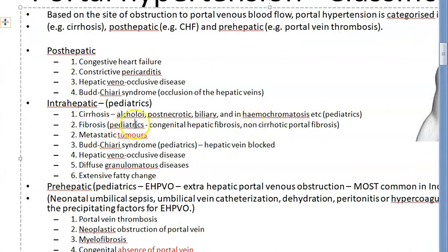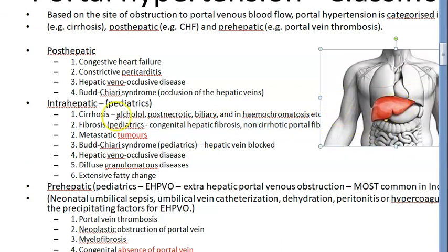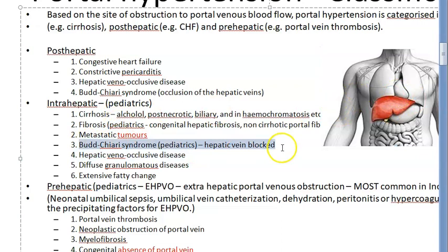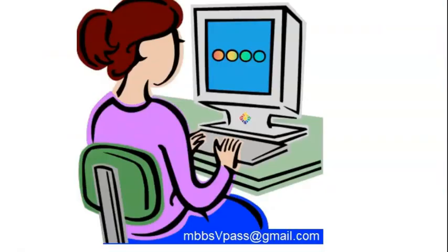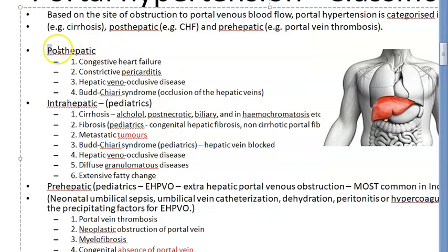Fibrosis can be congenital hepatic fibrosis or non-cirrhotic portal hypertension. In children there can also be Budd-Chiari syndrome, where the hepatic vein is blocked, leading to portal hypertension. Post-hepatic causes involve occlusion of hepatic veins — but in children, the main thing to remember is that pre-hepatic EHPVO is the most common cause.